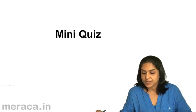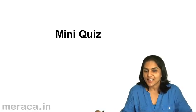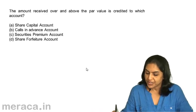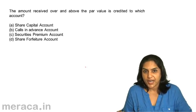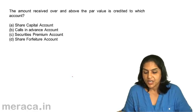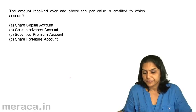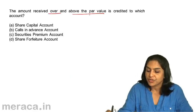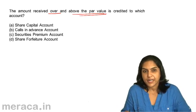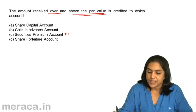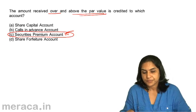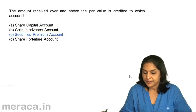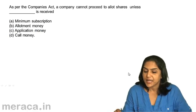Let us take a short quiz to quickly test our understanding so far. The amount received over and above the par value is credited to which account? A) Share Capital Account, B) Calls in Advance Account, C) Securities Premium Account, D) Share Forfeiture Account. The amount received over and above the par value is credited to the Securities Premium Account. The correct answer is C.